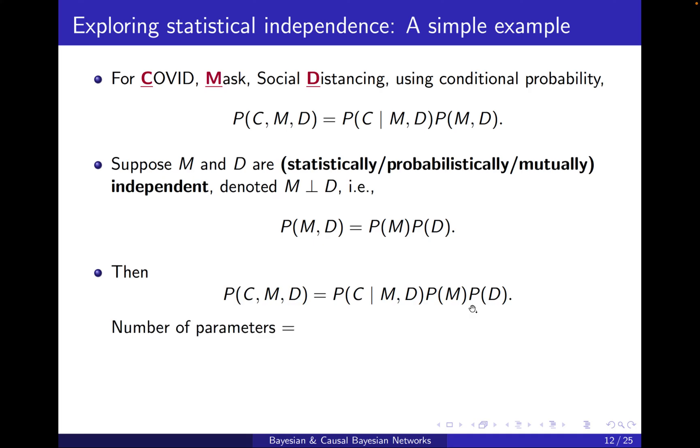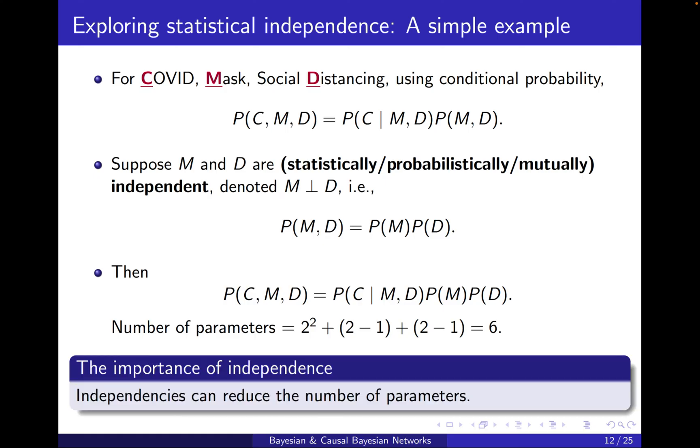But what is the effect on the number of parameters? Here you can see that instead of 7 that we had before, now we will have 2 to the power of 2 for this conditional independence. Remember 2 for M, 2 for D, which is 4. And then 2 minus 1 for C, which is still 4. And then 1 for P of M and 1 for P of D. In total it will be 6. So we had 1 fewer parameters. And this simple example is to exhibit the importance of independence. Independencies can reduce the number of parameters.